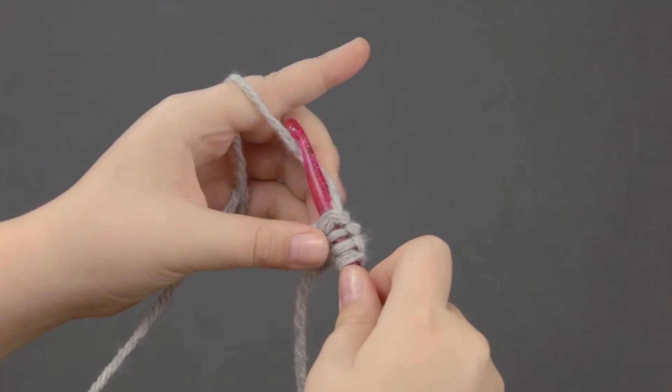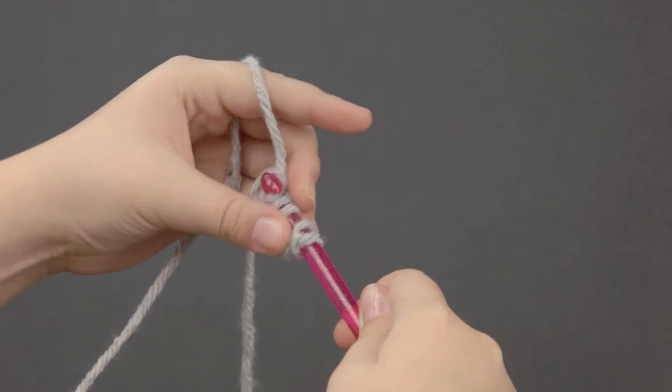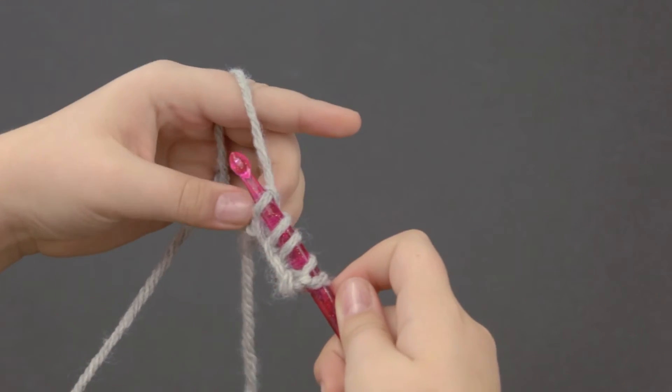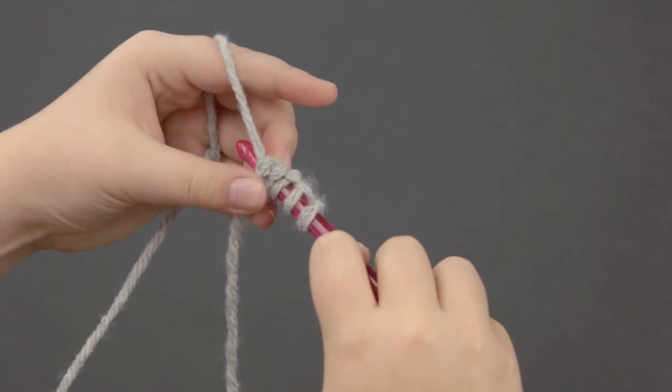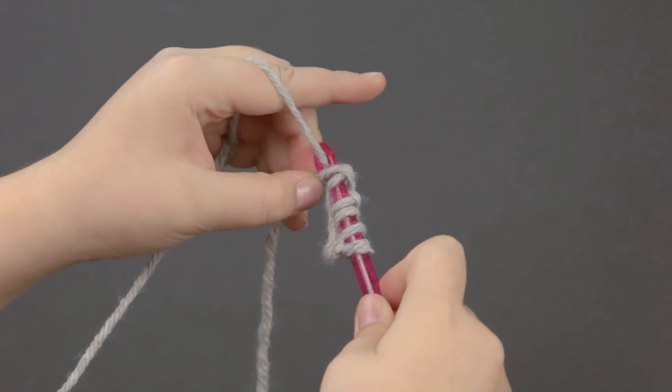Insert it into the fifth one, catch the yarn, and pull it through. And the sixth one, catch the yarn, and pull it through.